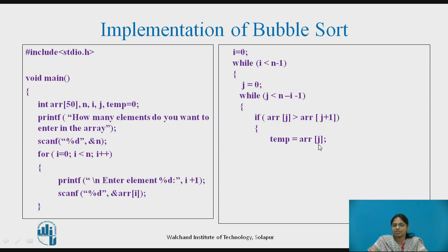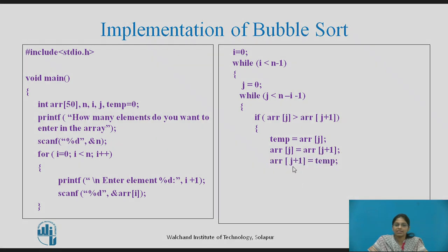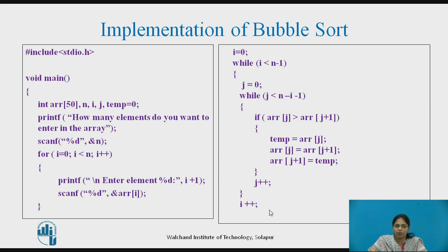The swap places the jth element into the temporary variable, then puts the j+1th element at position j, and the j+1th position gets the temp value. This completes the swap between A[j] and A[j+1]. After swapping, j is incremented by 1, which ends the inner while loop iteration. After coming out of the inner while loop, i is incremented by 1.